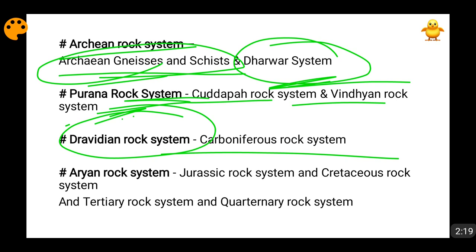Then comes the Aryan rock system, and the Aryan rock system starts with the Gondwana rocks. These Gondwana rocks lie between the Carboniferous rock system and the Aryan rock system. Most of the coal found in India is of the Gondwana rock system — the bituminous coal and other types of coal. After that in the Aryan rock system comes the Jurassic rock system, the Cretaceous rock system which is also known as the Deccan Traps.